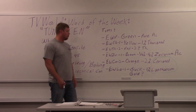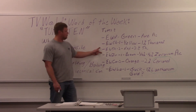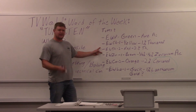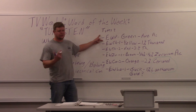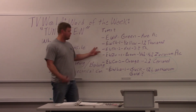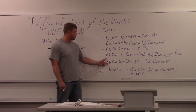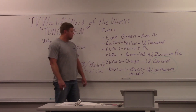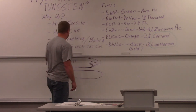We always use EWTh-2 red two percent thoriated on steel and stainless, and pure for aluminum — it's just what we do and we haven't had any problems with the thorium. If you're concerned about radioactivity, go with the ceriated two percent orange. Now let's go over the different tip shapes.